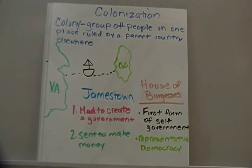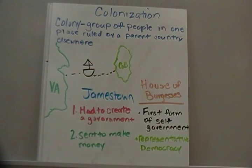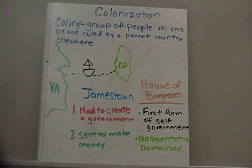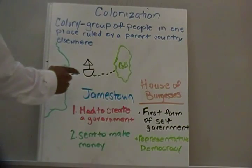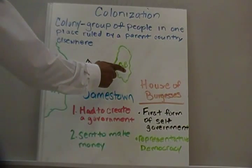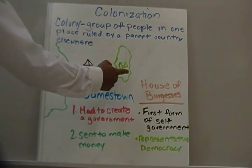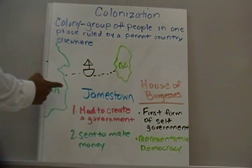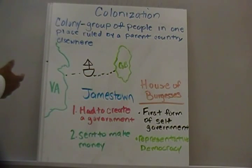All right guys, here we go for video number two. We're going to connect today to yesterday, and to start off by doing this connection we're going to look at the word colonization and with that what a colony is. Now a colony is a group of people in one place ruled by a parent country elsewhere. In this illustration you have individuals coming from Great Britain or England traveling across the ocean to what we now know as Virginia, and they set up their first colony.